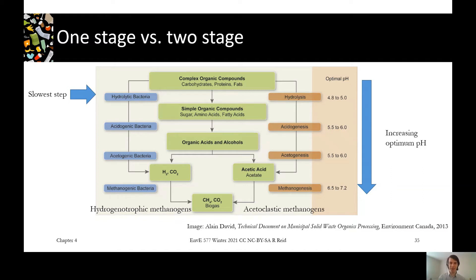Batch processes and plug flow processes don't have this issue of mixing the material together. The material is aging together as it moves through the plug or sits there in the batch, so it doesn't need to be divided up — it's going to go through all these changes in order together.